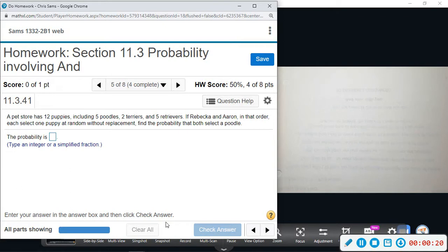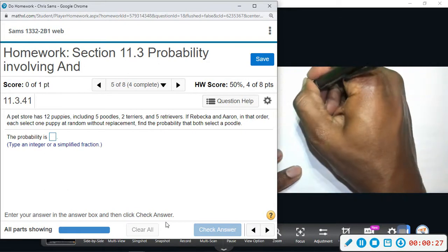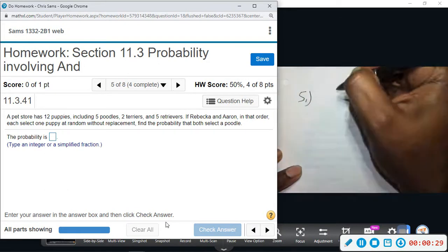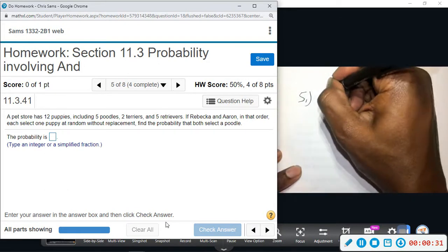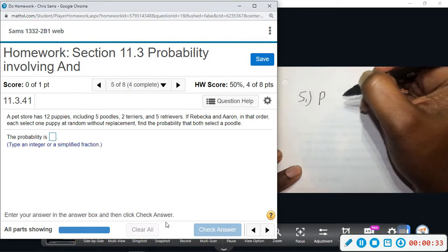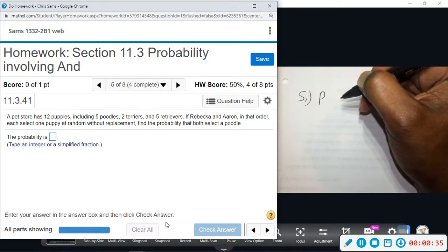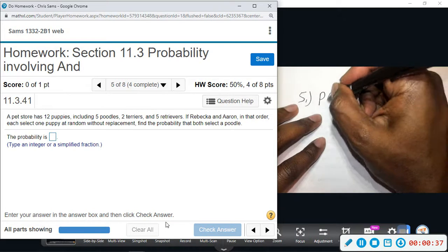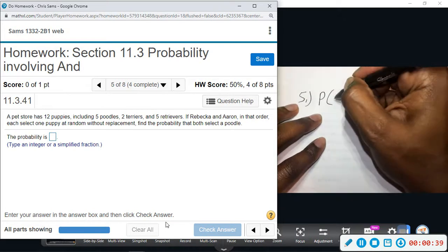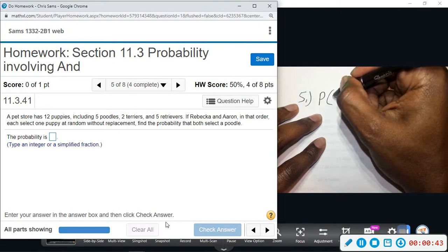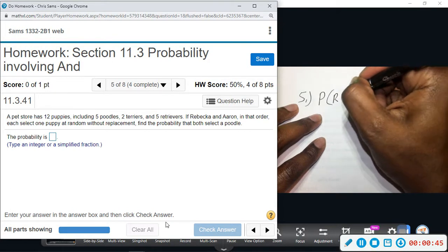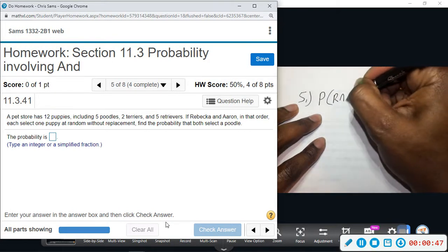Okay, so without replacement this time makes a difference. We're going to look for the probability that they both select the poodle. So this is what we want to look at, the probability that, and I'm just going to use P for poodle, probability that Rebecca selects and Aaron selects a poodle.